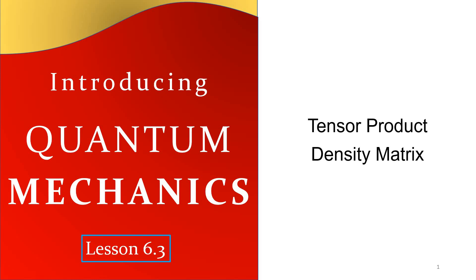Welcome to lesson 6.3 in this series introducing quantum mechanics. In this video series we are talking about Dirac notation, which is often called Bra-Ket notation. We have divided this concept into three parts — lessons 6.1 and 6.2 dealt with the basic introduction, and now we are ready to go into the advanced part, which is tensor product, otherwise called the density matrix.